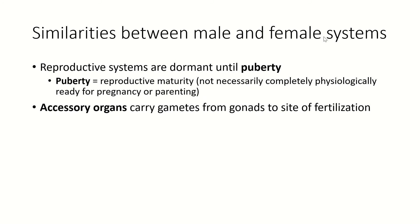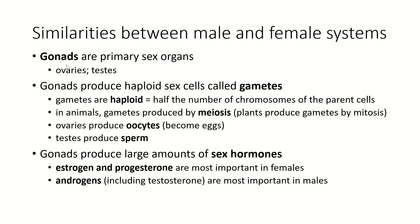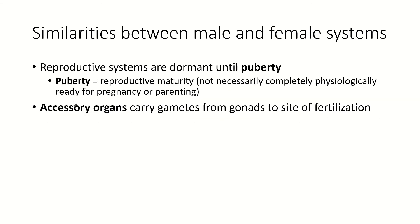The reproductive systems develop before birth and then sit dormant until puberty. Puberty is defined as reproductive maturity — the point at which the reproductive system essentially turns on. It does not necessarily mean that a person is physiologically ready for pregnancy, and certainly doesn't mean they are sociologically or mentally ready for parenting. It just means their reproductive system has started operating. Prior to puberty, the reproductive system doesn't produce gametes. The organs — the gonads — are the primary sex organs; everything else is an accessory organ, and their job is to carry the gametes from the gonads to the site of fertilization.